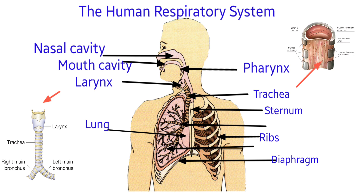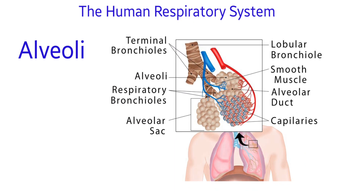The larynx or voice box is a cavity at the top of the trachea which contains the vocal cords. At its lower end, the trachea divides into two branches called the bronchi — the singular is bronchus — leading to each lung. Inside the lungs, each bronchus divides again and again to form bronchioles. These fine branches form a mass of little thin-walled pouch-like air sacs called alveoli.